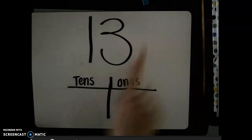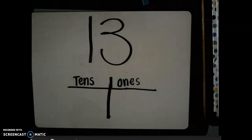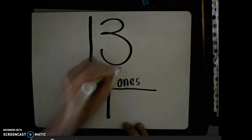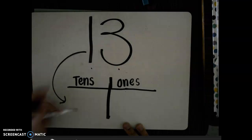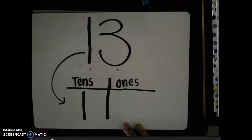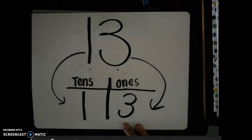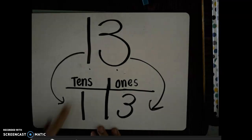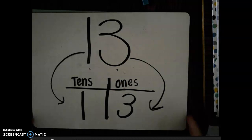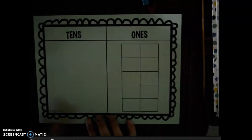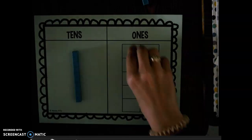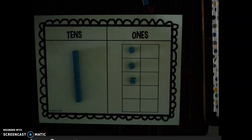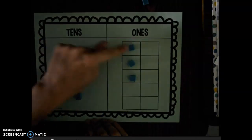Let's represent the number 13. How many digits is the number 13? 13 is two digits — it's a two-digit number. That means we have a number in our tens place, which is a one, and a number in the ones place, which is the number three. So when we build this number, it's telling us that we have one group of ten and three extra ones. I need one tens rod and then three extra ones: one, two, three. The way we would count this is ten, eleven, twelve, thirteen.